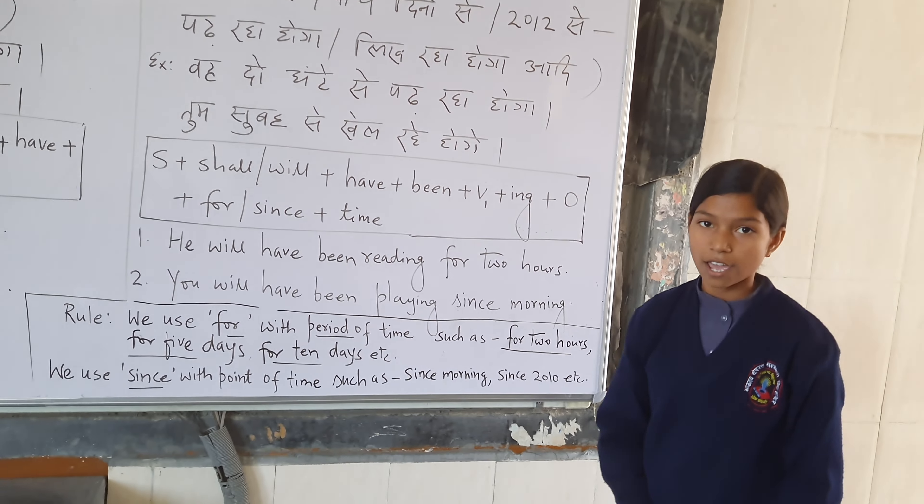For example, where you play for two hours, you play in the morning. The formula is: Subject plus shall/will plus have plus been plus verb first form plus ING plus object plus for/since plus time.